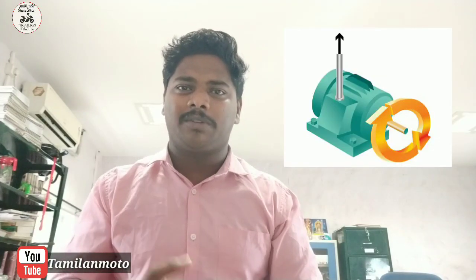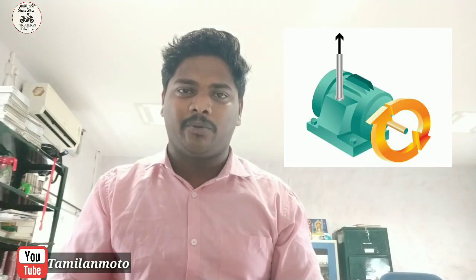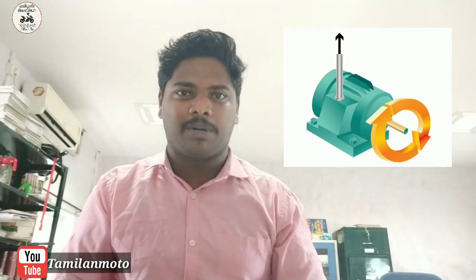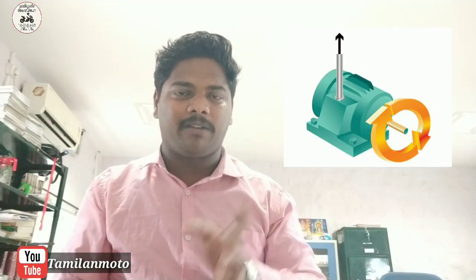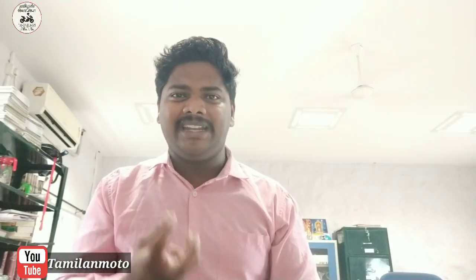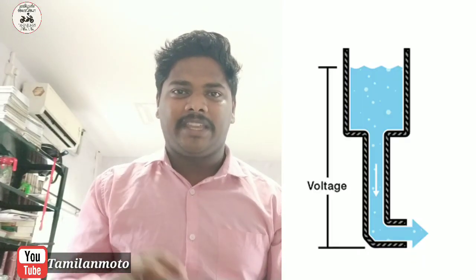Voltage and current can be converted. The unit of power is watts. Power is the work done by electricity. Let's talk about a simple example — a water tank. The tank and the valve work the same way; if the valve is open, the flow begins.